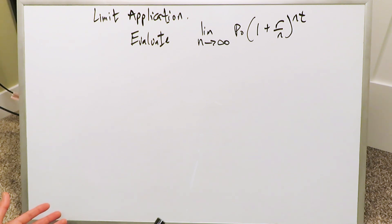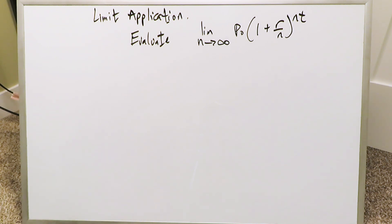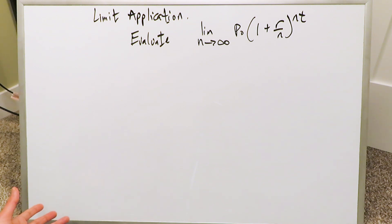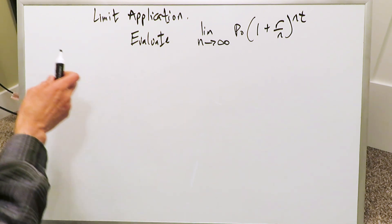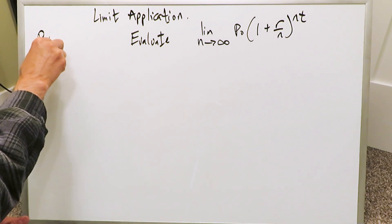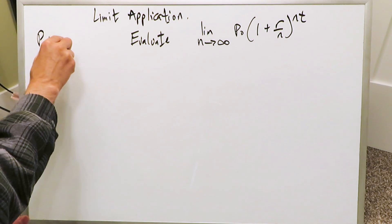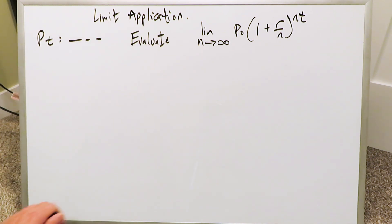This is the periodic compound interest formula: principle at time zero, times one plus rate divided by the number of periods, all to the power of number of periods times the years. The limit as n approaches infinity of that entire formula essentially equals principle at time t.